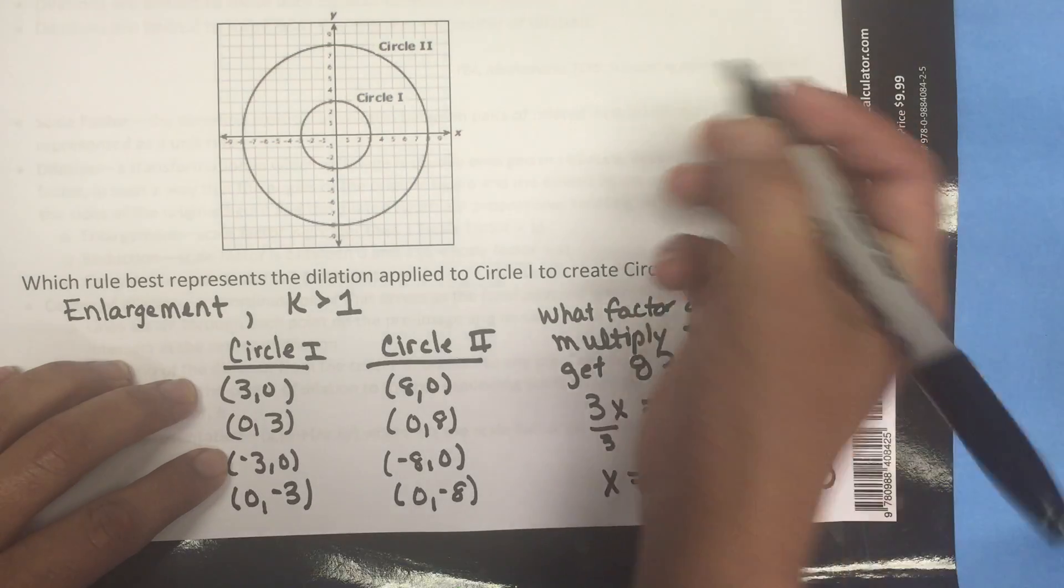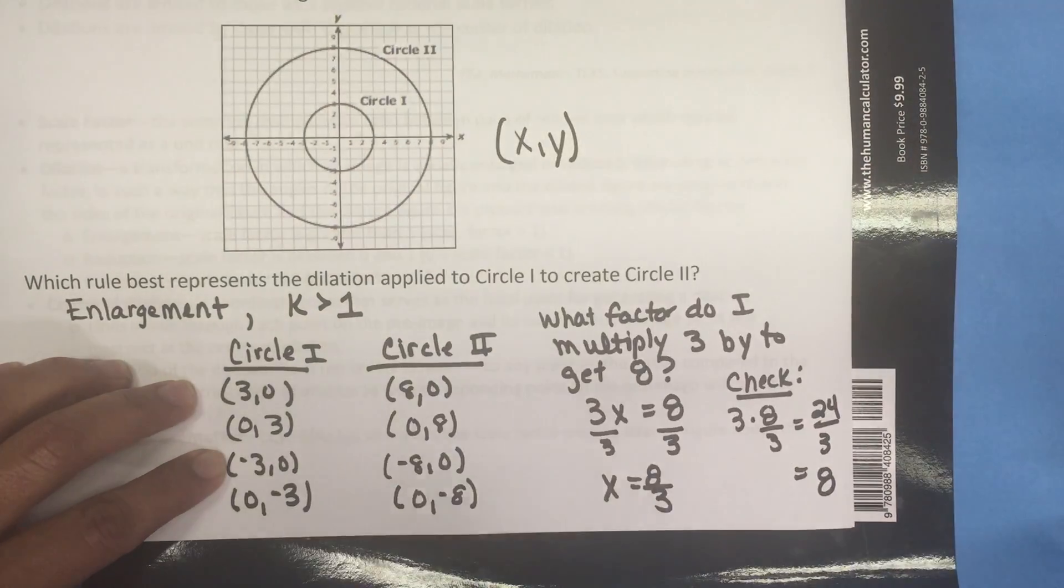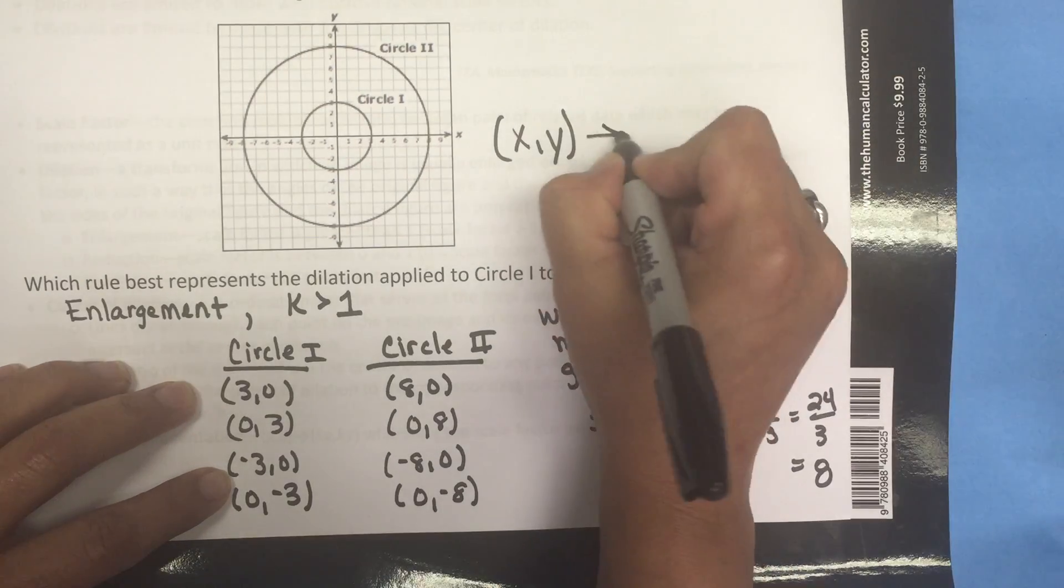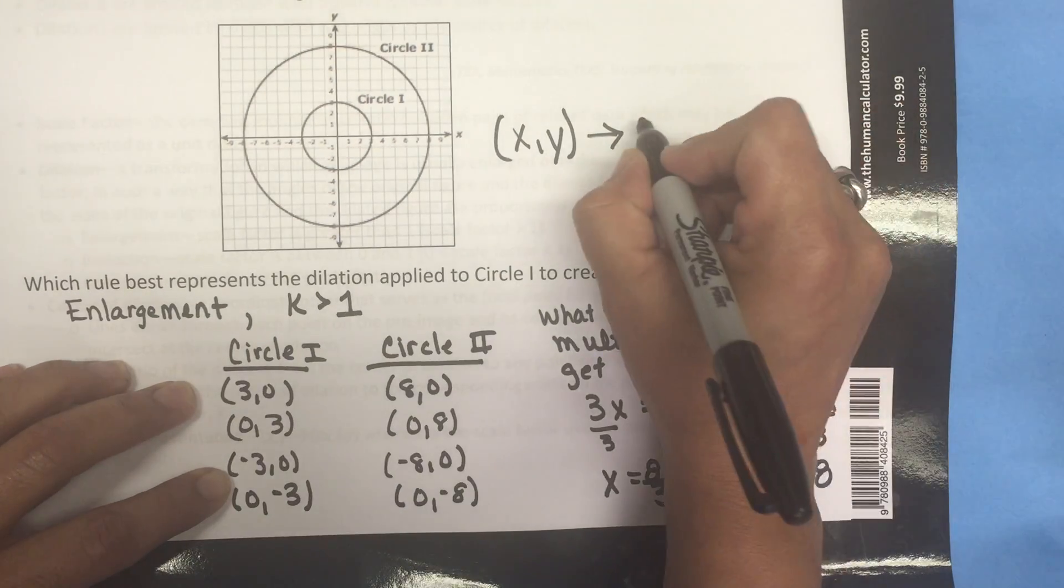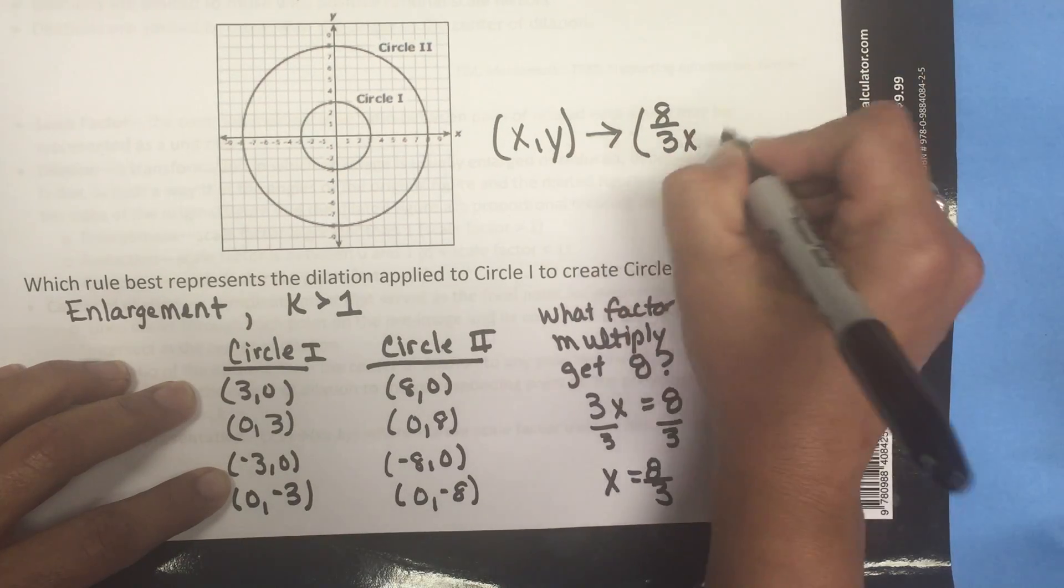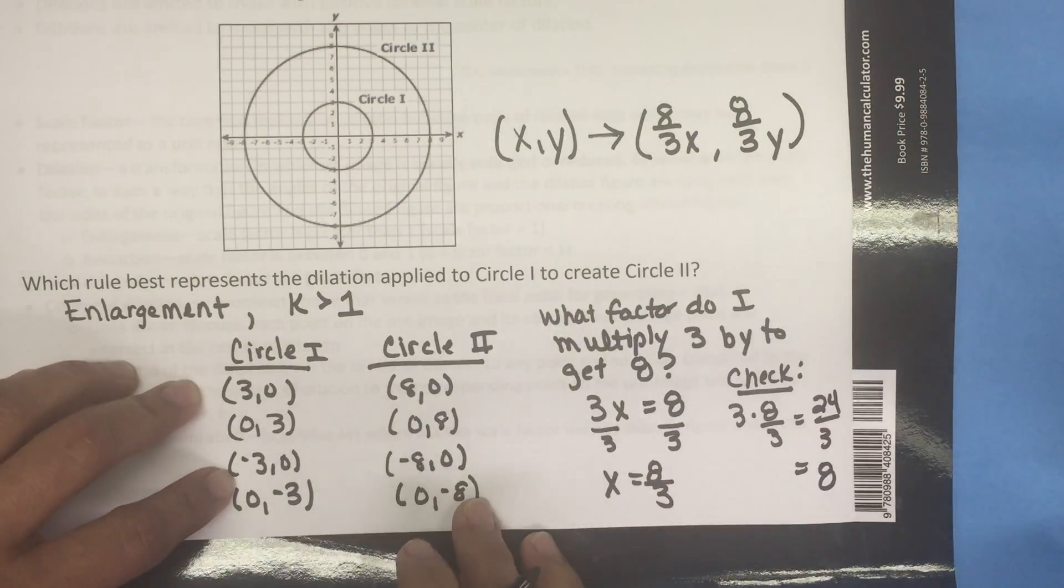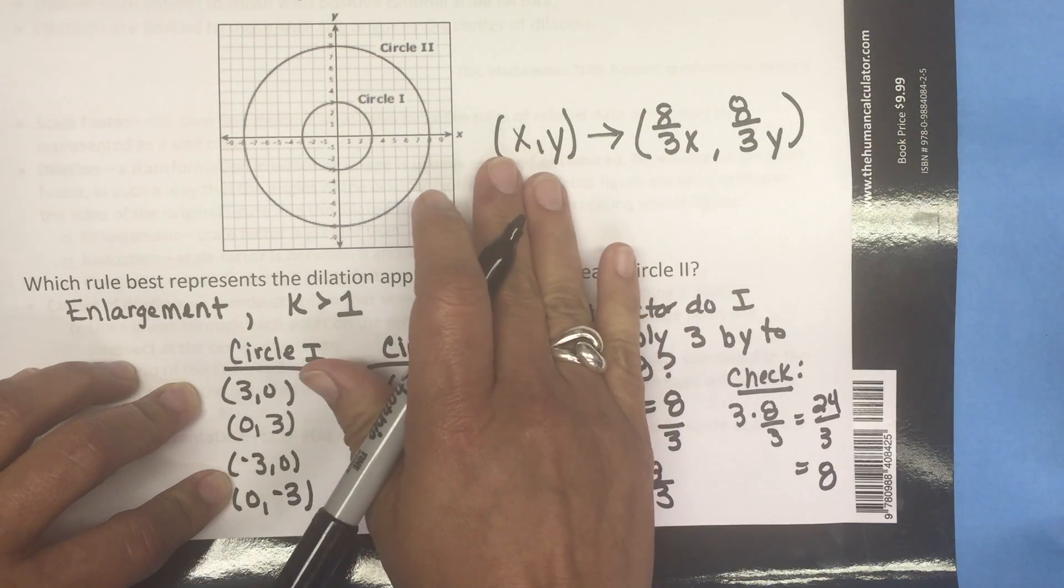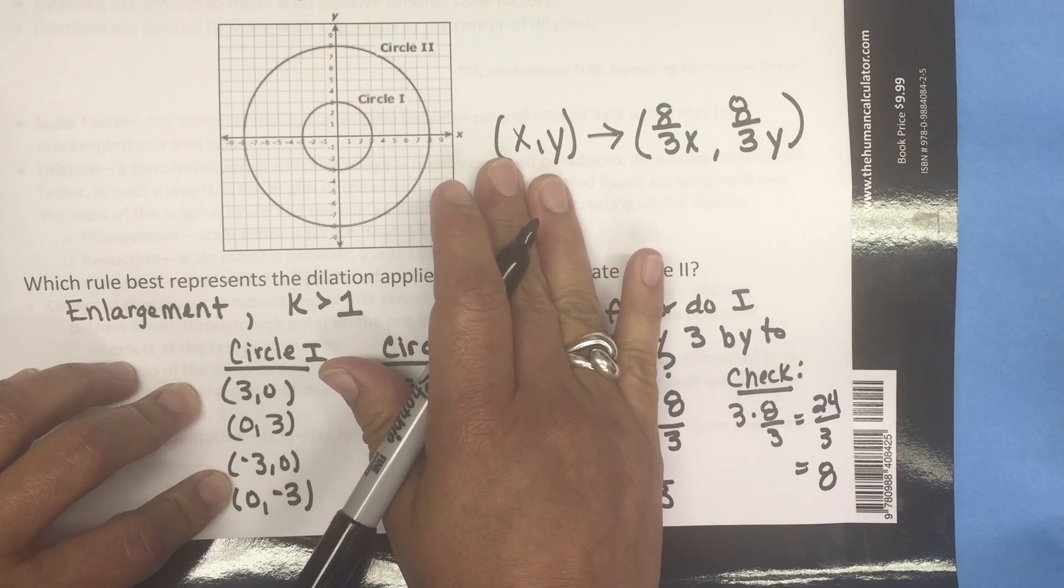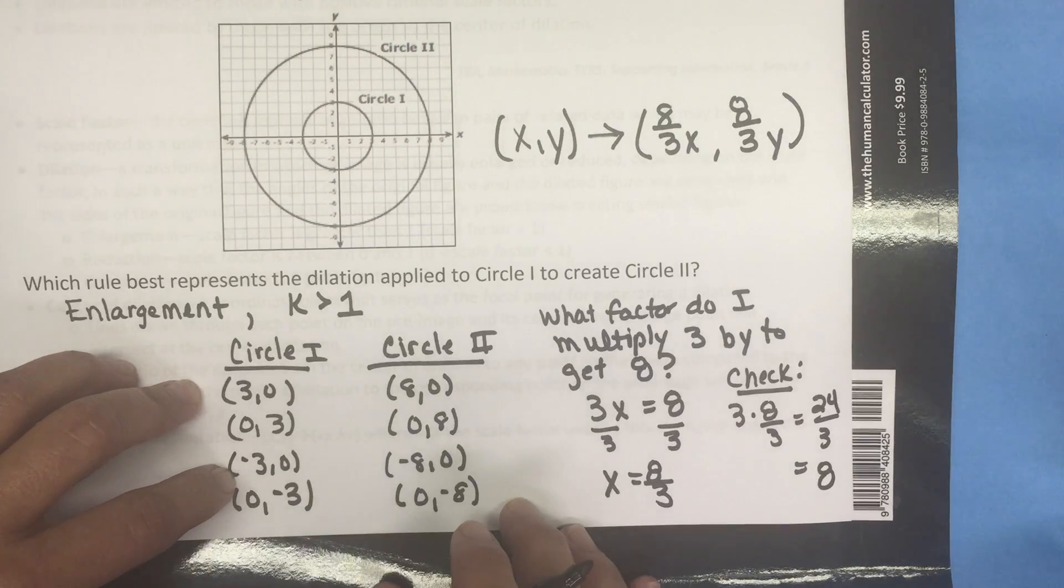So what algebraic representation would represent this dilation? Well that would be xy is transformed to 8 thirds x, 8 thirds y. This means that I must multiply all of the coordinates in the original image by 8 thirds to get the coordinates of the dilated image.